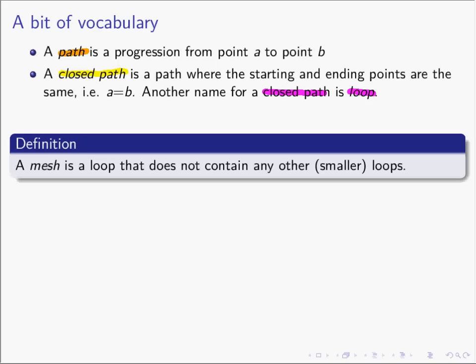For today we're going to be doing mesh analysis, so we need to introduce what a mesh is. A mesh is a loop, but it's a loop that does not contain any other smaller loops within it. For instance, if we have a circuit — the little squiggles are meant to represent circuit elements — this is a loop because there's a closed path, and it's also a mesh because there is no smaller loop within it.